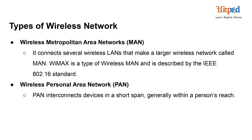A wireless metropolitan area network (MAN) is a network that connects several wireless local area networks (LANs) to create a larger wireless network covering a metropolitan or urban area. It extends the coverage beyond the individual LANs, allowing devices to communicate over a larger geographical area. WiMAX, which stands for Worldwide Interoperability for Microwave Access, is a prominent example of a wireless MAN technology.